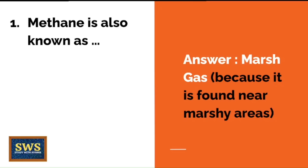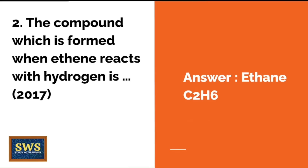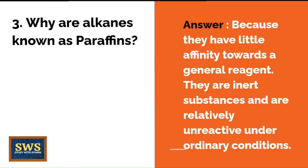The compound formed when ethene reacts with hydrogen — this is from the 2017 board paper — the correct answer is ethane. Why are alkanes known as paraffins? Because they have little affinity towards reagents; they are inert substances and relatively unreactive under ordinary conditions. These are key keywords to include in your answer.